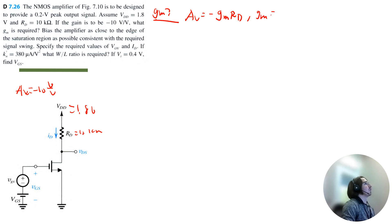So therefore GM is equal to negative AV divided by RD. So that is negative negative 10 volt to volt divided by the resistance of 10 kilo ohms. So those negative signs will cancel out and we get 1 milliamp per volt. Next question.